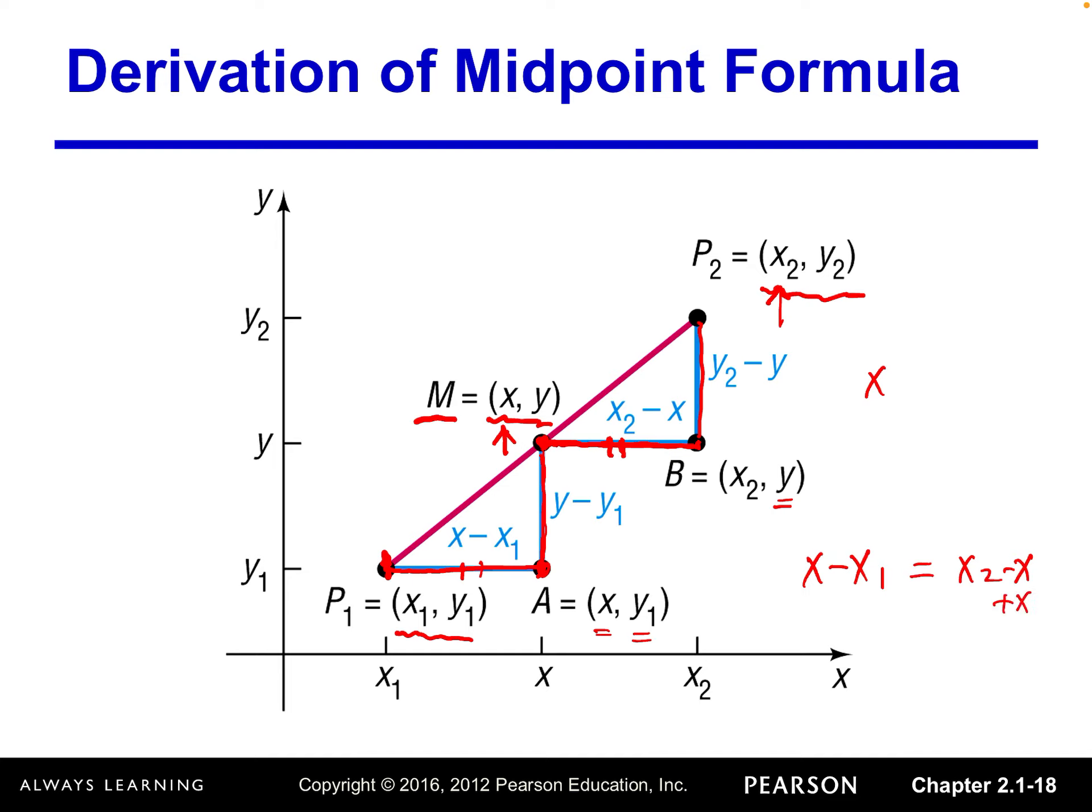We both sides add X and then add X1. So we got 2X equals X1 plus X2. Therefore, we can solve X equals one half of X1 plus X2.